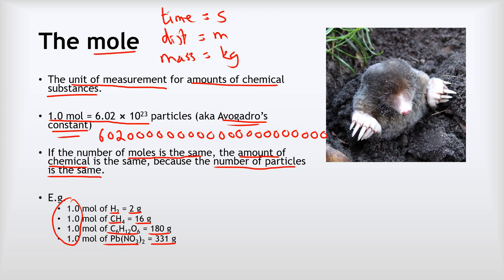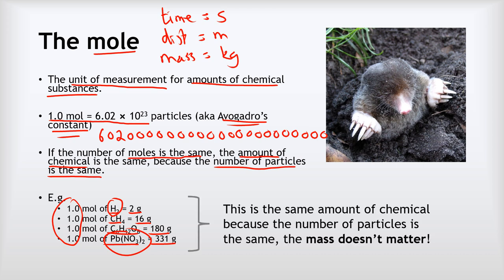It's just that one mole of hydrogen has a much smaller mass than one mole of lead nitrate because it's a much smaller molecule, but the total number of particles is the same. So it's the same quantity. These are all the same amounts of chemical because the number of particles is the same. The mass doesn't matter — only the number of particles does. And that's what the mole tells us.